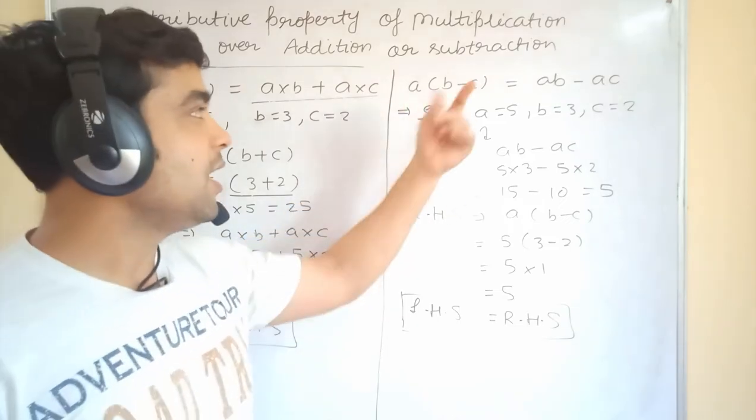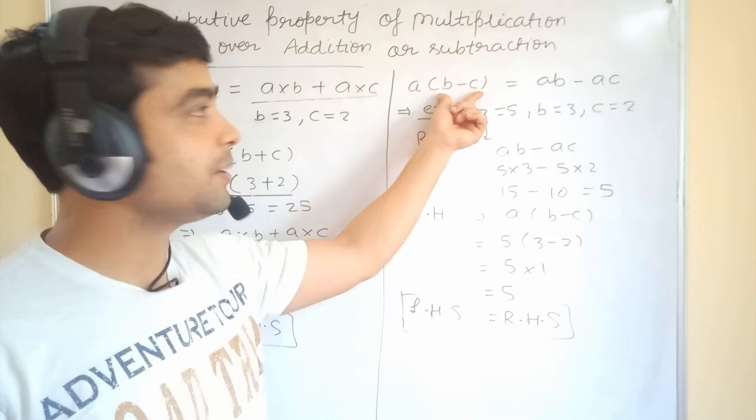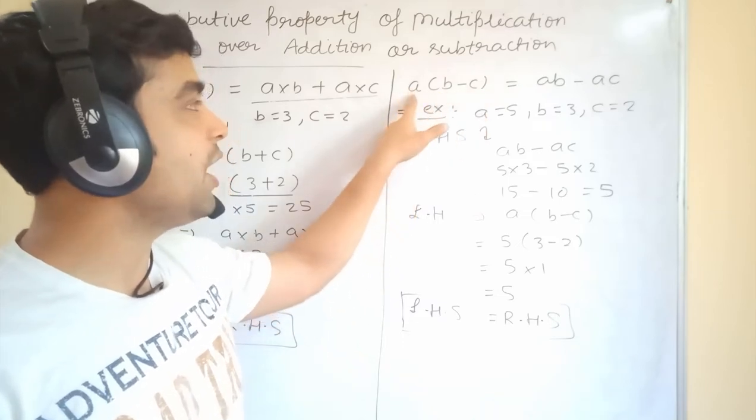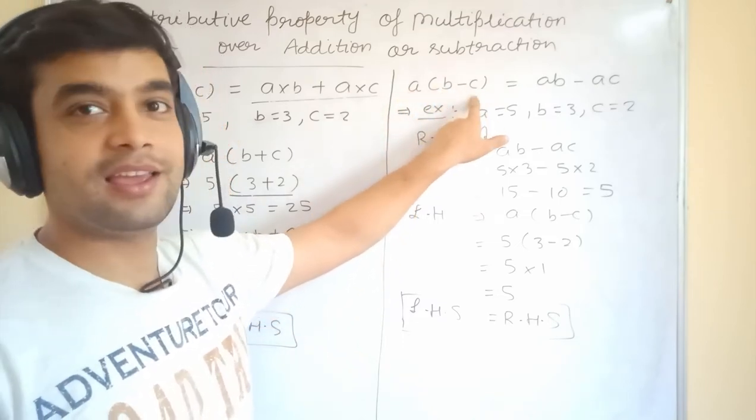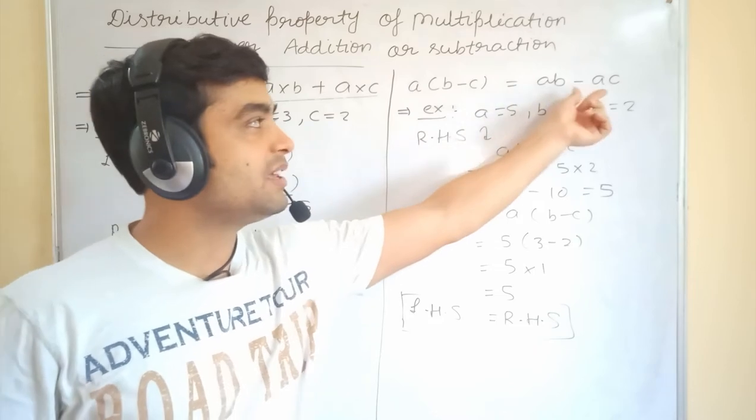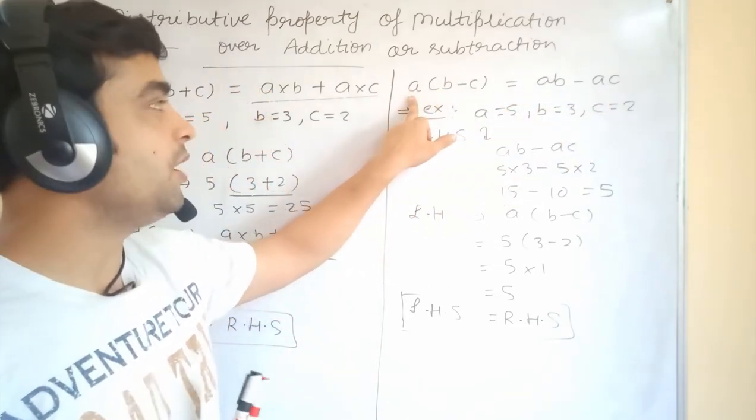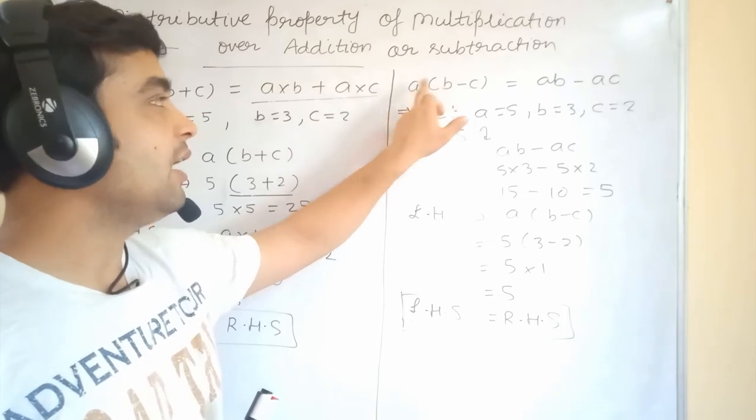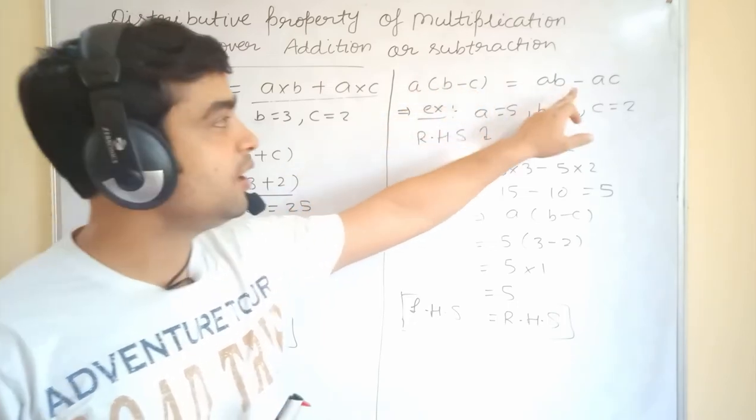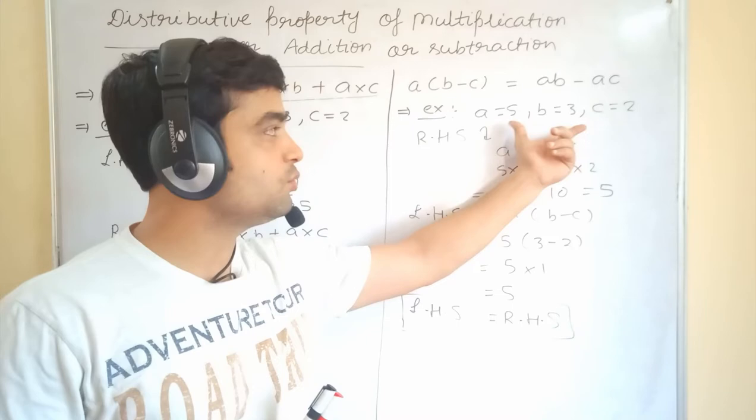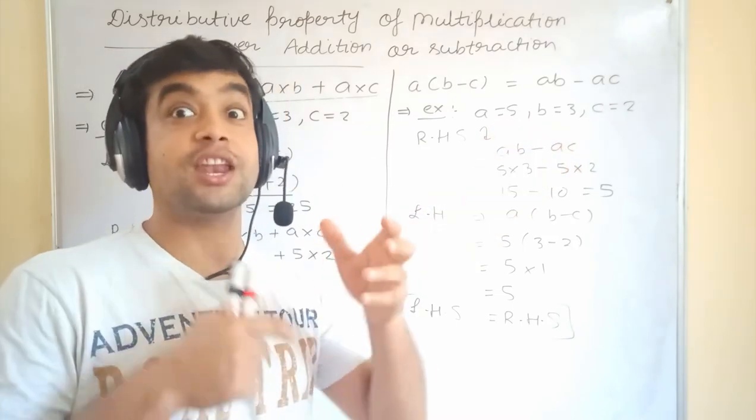Let's see over the subtraction means B minus C. We are subtracting and then we are distributing A over the B and C. And, they are writing like AB minus AC. A has distributed according to the property A into B and A into C. And, in between minus sign will come. Let's see through the example whether it is correct or not.